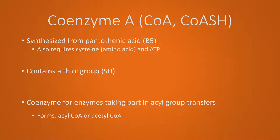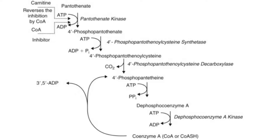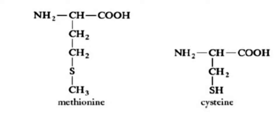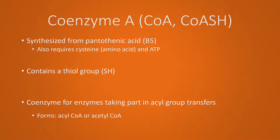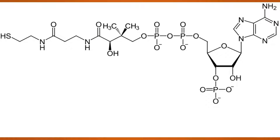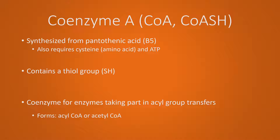Let's talk about coenzyme A. We already know it's synthesized from pantothenic acid and it requires ATP. But if you take a look at that pathway earlier, notice it also requires cysteine, which is one of two amino acids that contains the element sulfur. That's important because that sulfur in the cysteine will end up as a thiol group in our coenzyme A when it's all said and done. And because our coenzyme A has a thiol group or an SH group, that's why when we're abbreviating coenzyme A, we can either abbreviate it as CoA or CoASH. They both mean the same thing - coenzyme A.